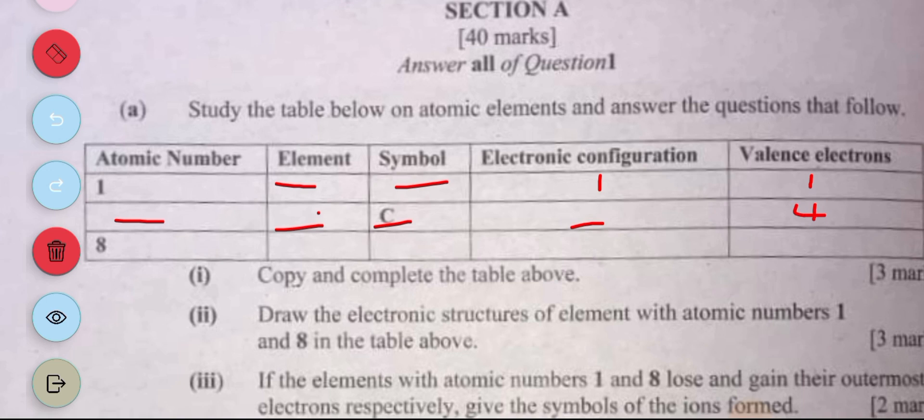The next one is 8. The element is oxygen. The symbol is capital O. Electron configuration is 2 comma 6. The valence electrons are 6.